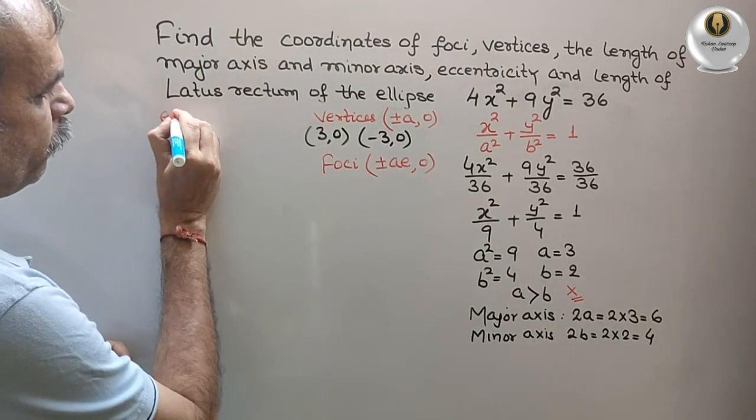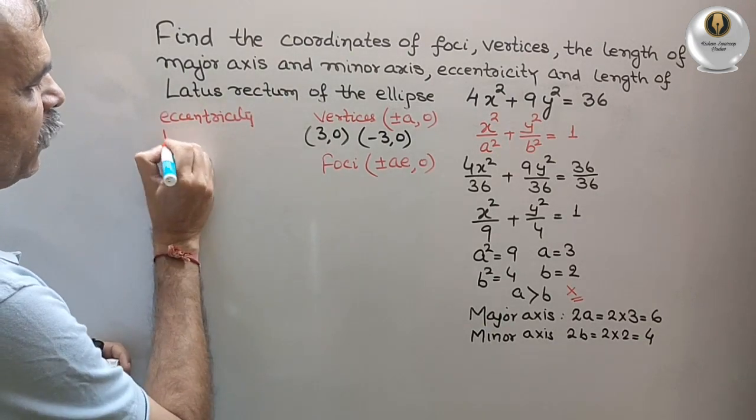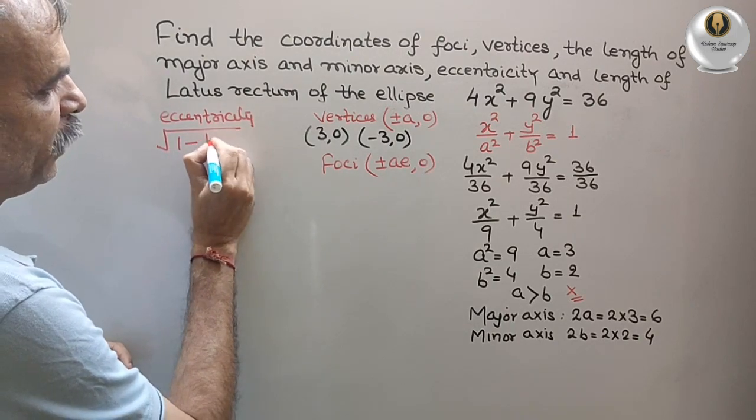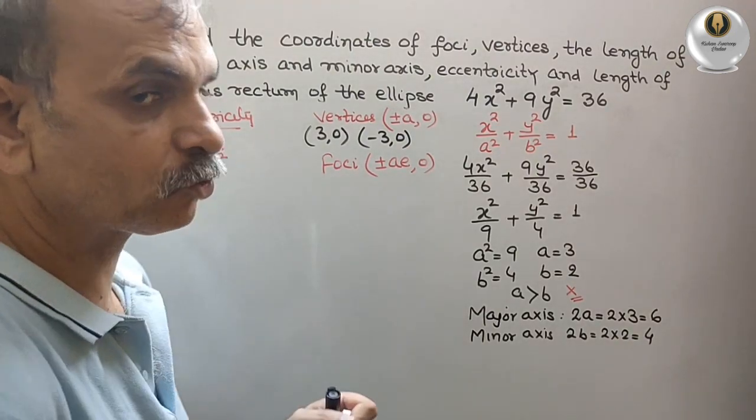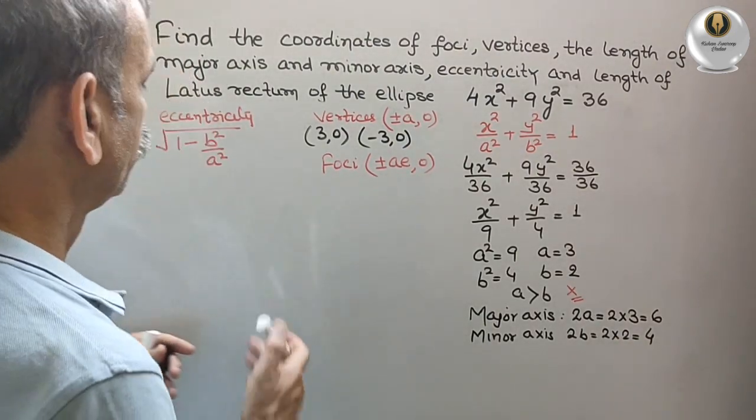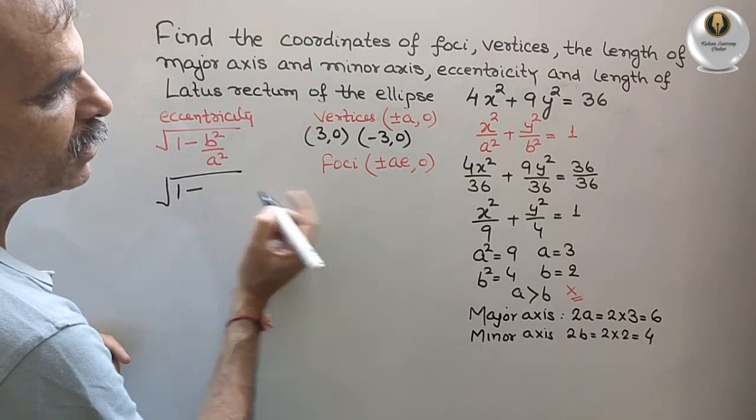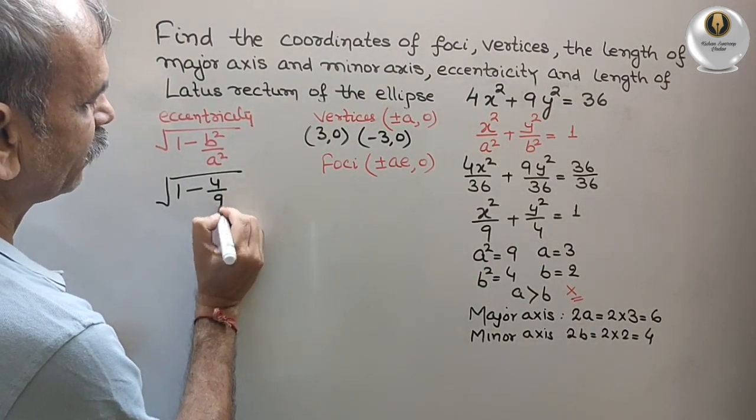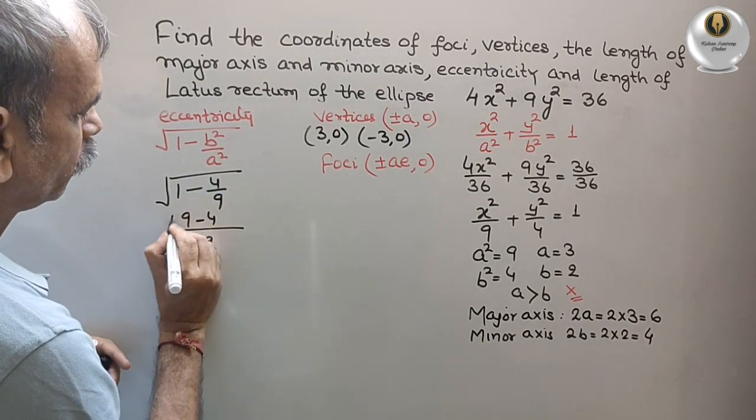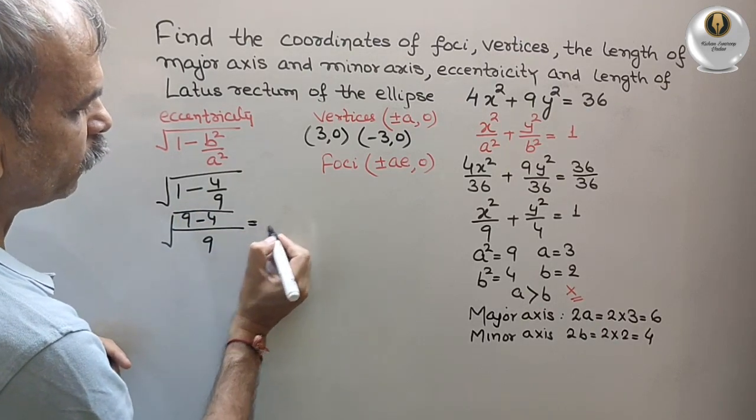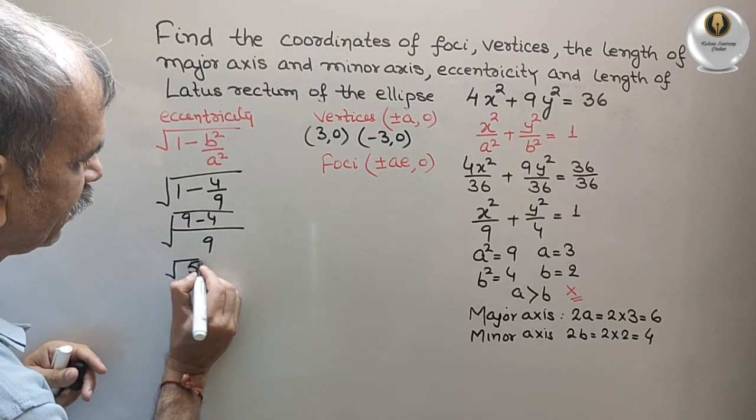So eccentricity, that is your √(1 - b²/a²). Minor axis square by major axis square. So here what you will get √(1 - b²), that means it is 4/9. Take the LCM here. You will get √(9-4).